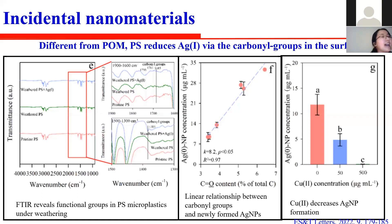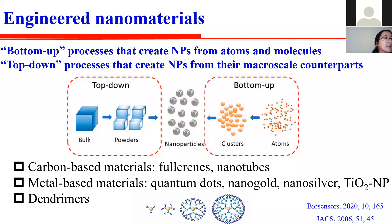Although particulate organic matter and PS microplastics can both induce the formation of silver nanoparticles, their chemical mechanisms are distinct. Engineered nanomaterials can be synthesized by two pathways. The first is a bottom-up process that creates nanoparticles from atoms and molecules. The other is a top-down process that creates nanoparticles from their microscale counterparts. The most abundant engineered nanomaterials are carbon-based nanomaterials, metal-based materials, and dendrimers.